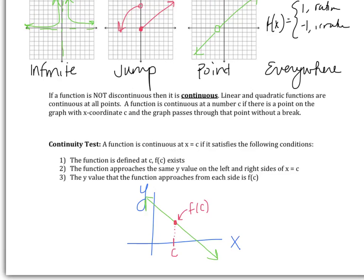So there's a continuity test that you need to pass three different criteria. A function is continuous at x equals c if it satisfies the following condition. One, the function is defined at c and f of c exists. So we pick a point c, plug it into the function. If we get out a number, then the function exists at that point. The second condition is the function approaches the same y value on the left and right sides of c. So let's say I'm on this line and I'm coming from the right to c. All my y values are approaching c from the right and they're approaching c from the left. And then the last thing is the y value of that function approaches from each side of f of c. So the x value approaches from the left and the right and the y value approaches from the left and the right.